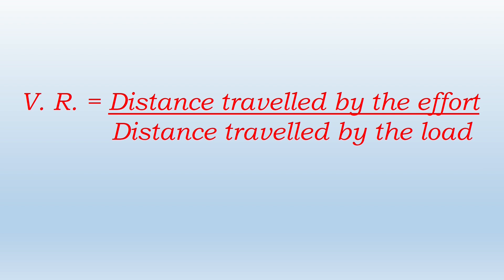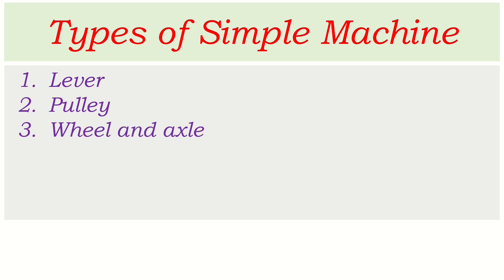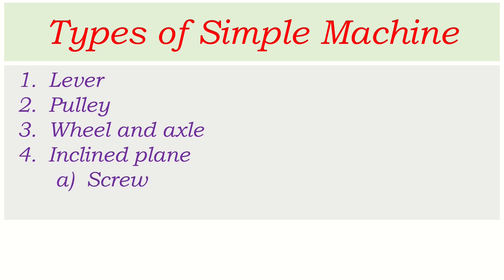The formula for different simple machines is different. There are four basic types of simple machine: number one lever, number two pulley, number three wheel and axle, number four inclined plane. But there are two other simple machines which come under inclined plane — they are also called modified versions of inclined plane. They are screw and wedge. In all these simple machines the ratio of distance traveled by the effort to the distance traveled by the load is the velocity ratio, but the distances are different in different simple machines. In a lever it is different, in a pulley it is different. That's why the formula for velocity ratio is different for all these simple machines.